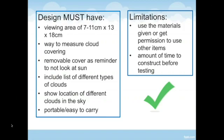For this design challenge, there are certain criteria that you have to have. Those are things that you absolutely must have in your design. And then there are limitations that you can set for your challenge. For this design challenge, we're going to ask that you have a viewing area that's between 7 and 11 centimeters wide and 13 to 18 centimeters long. Your design challenge needs to have a way to measure the amount of cloud covering that you can see in it. We'd like for your design to have a removable cover that will help to remind you about the importance of making sure that you never stare directly at the sun. We want your cloud cover estimator to have types of clouds so that you can remember what type of clouds you're seeing. And it needs to be portable or easy to carry.